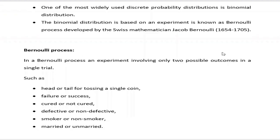In the Bernoulli process, there will be only two outcomes in a single trial. For example: head or tail for tossing a single coin, failure or success, cure or not cure, defective or non-defective, smoker or non-smoker, married or unmarried.